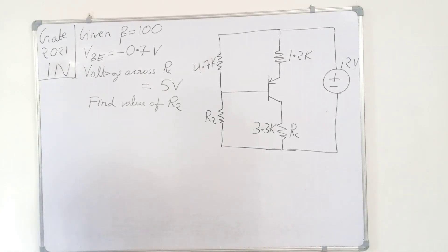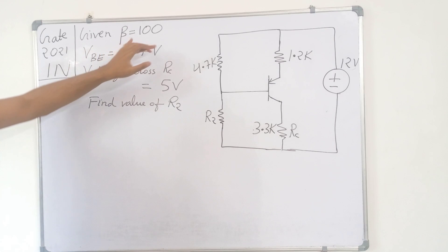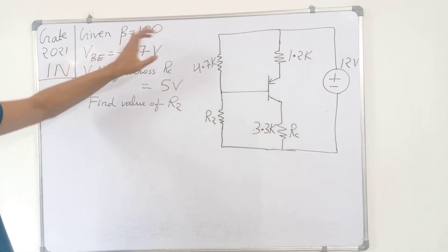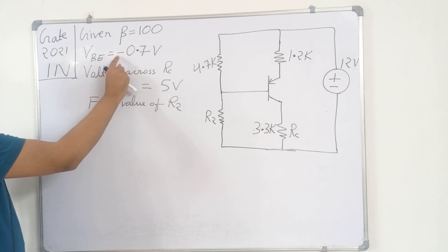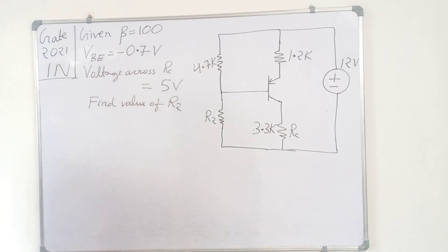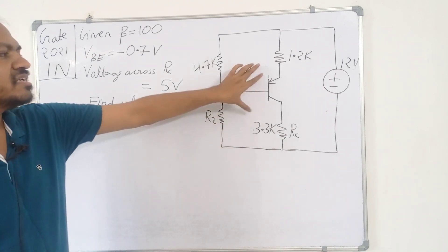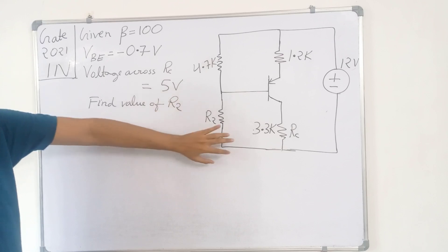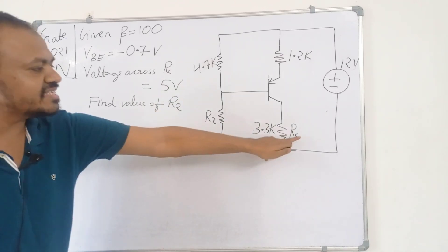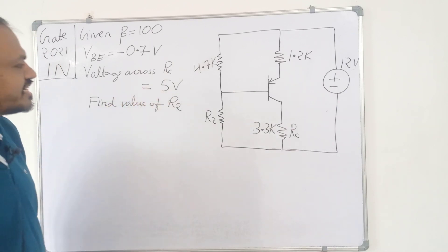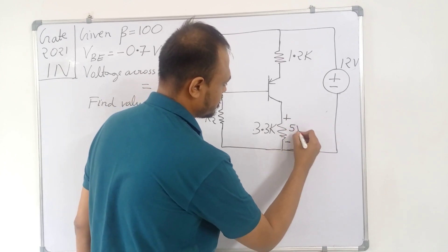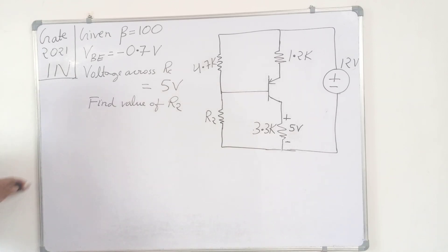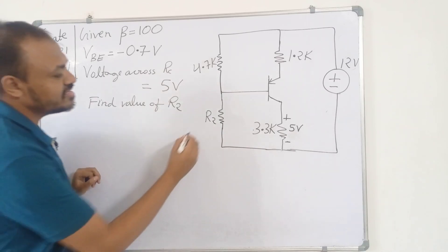Welcome. We are solving a question from GATE 2021 Electronics branch. This is the circuit which is given. The transistor beta is given as 100. This is a PNP transistor, so its base-to-emitter voltage is negative — VBE equals minus 0.7 volt for a silicon PNP transistor. The voltage across RC, the collector resistance, is given as 5 volt. We have to find the value of R2.